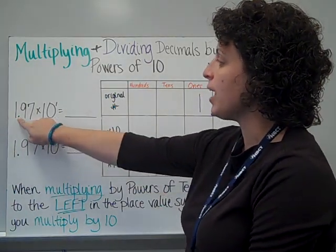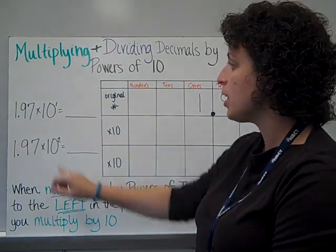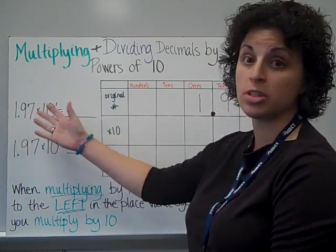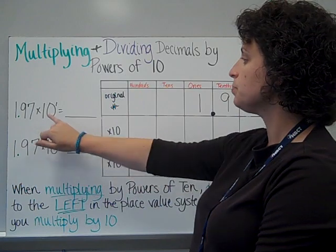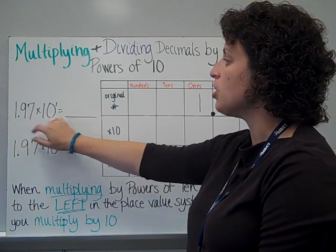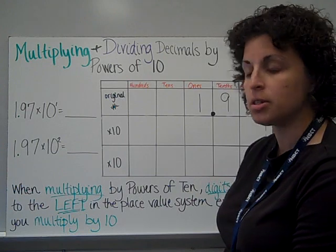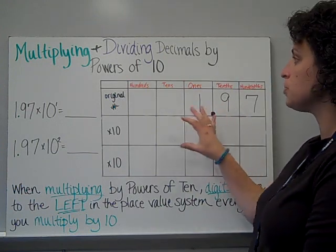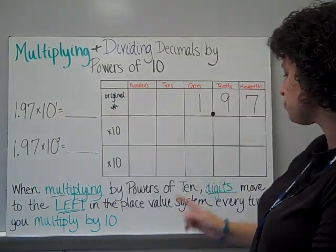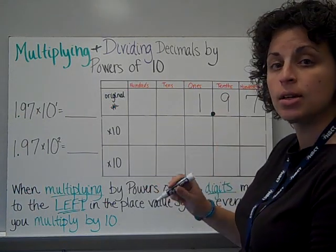My problem is 1 and 97 hundredths times 10 to the first power. 10 to the first power is just 10, so this problem is the same as 1 and 97 hundredths times 10. Every time we multiply by a 10, our numbers move to the left in the place value system. Here's my number in a chart — 1 and 97 hundredths. We are only multiplying by one 10, so the digits are going to move one place to the left.